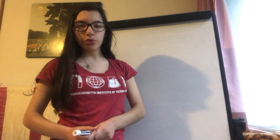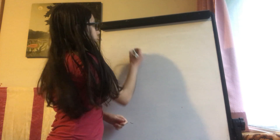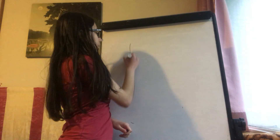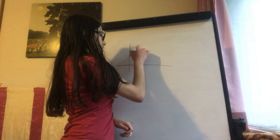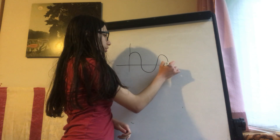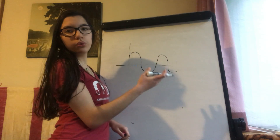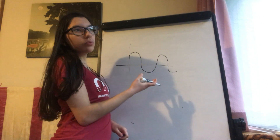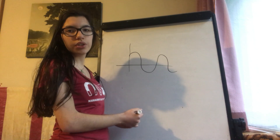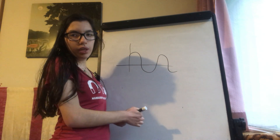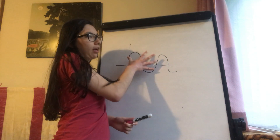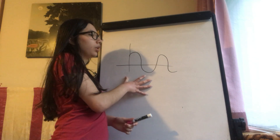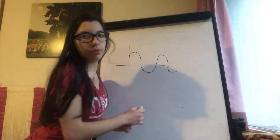Now we're going to see the mathematical equation of the wave. Remember, here we're just talking about the representation — for example, this. This is not the true form or shape of the wave. This is the mathematical representation, or the mathematical graph, of the behavior of the wave.